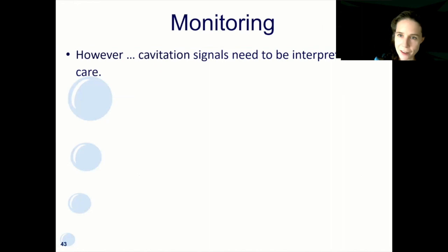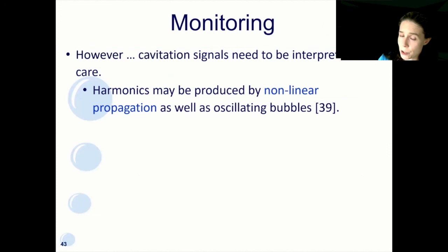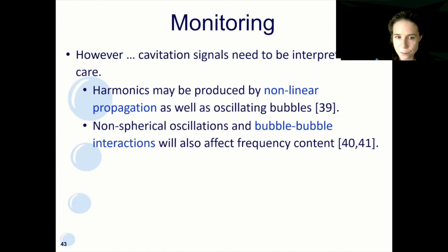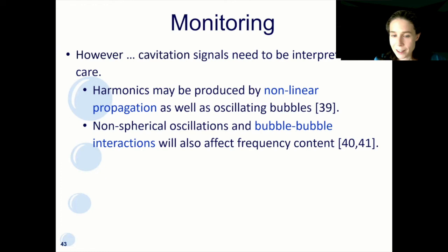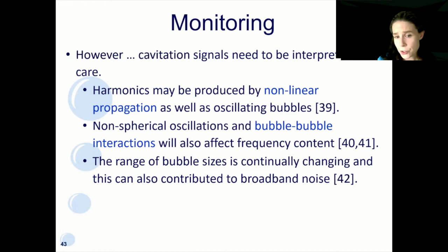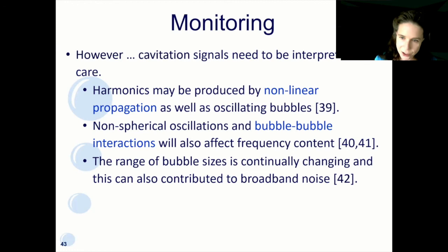I need to sound another note of caution here. Cavitation signals should be interpreted with extreme care. Nonlinear propagation can also produce harmonics as well as oscillating bubbles — you can usually distinguish it from the amplitude, but be aware there are lots of nonlinear processes occurring, particularly in therapeutic ultrasound. Frequency content will also be affected by non-spherical bubble oscillations and bubble-bubble interactions. You can get very nonlinear behaviour at low pressures if you have a large enough bubble cloud. Also, the range of bubble sizes is continuously changing: bubbles coalesce, collapse, they fragment — all of that can produce a wide range of frequencies that can look just like broadband noise. So it's not a simple correlation between broadband noise and inertial cavitation — it's just a useful rule of thumb. And depending on the electronics and bandwidth of the transducer used for detection, the resolution with which you're able to interrogate the signal will also affect what you're able to measure.